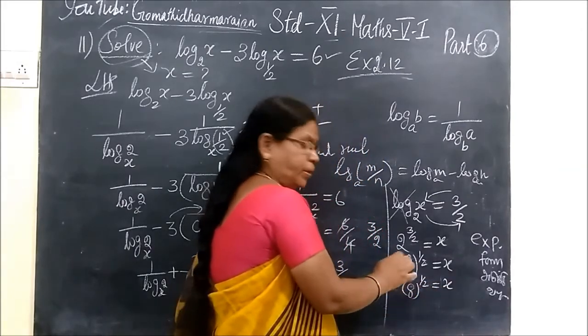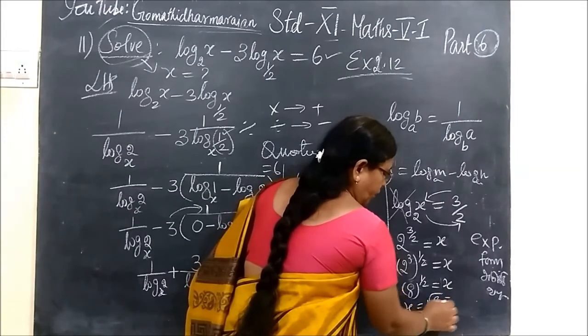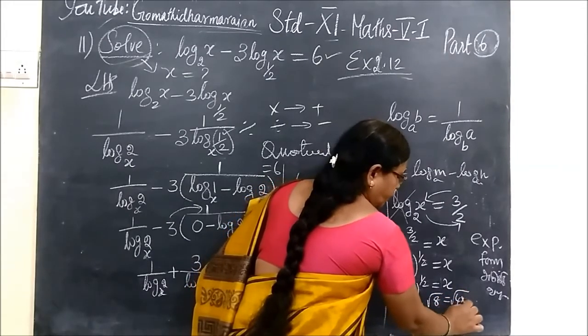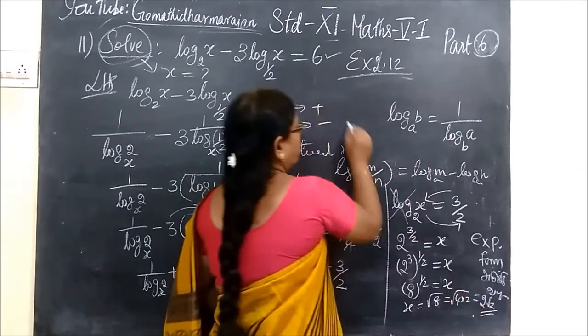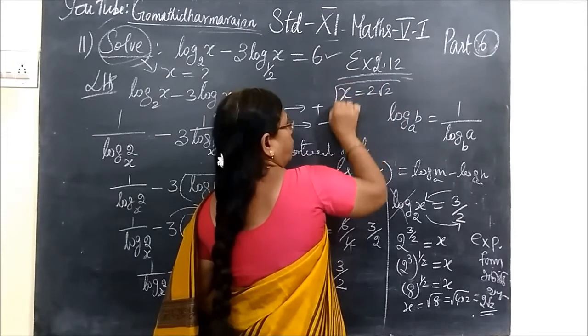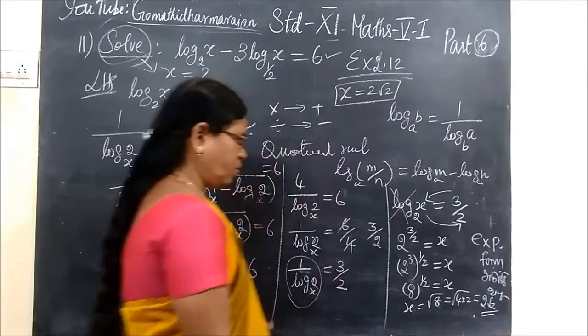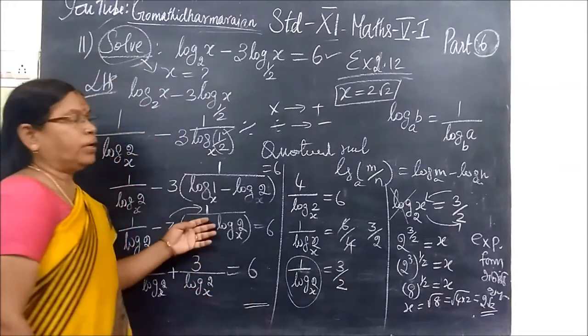This power of this is nothing but root. So x equal to root of 8. Root of 8 now 4 into 2 that is equal to 2 root 2. So the value of x is equal to 2 root 2. So in this way we are finding the answer for this. Thank you.